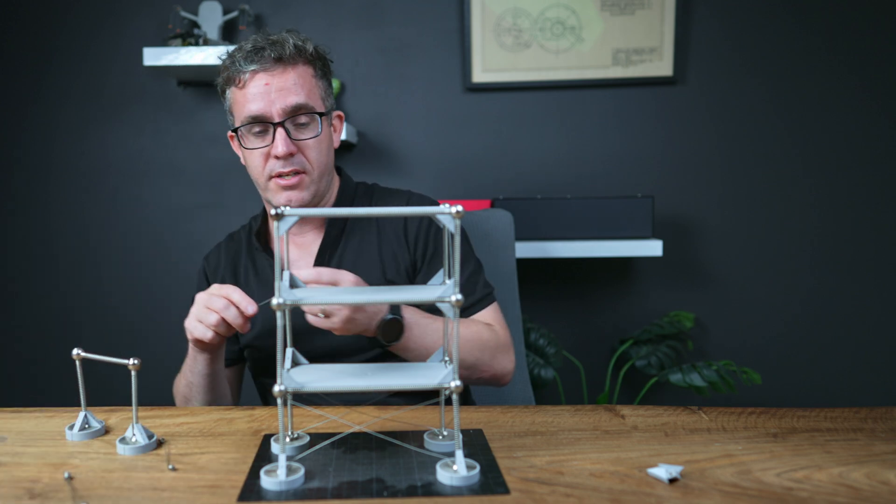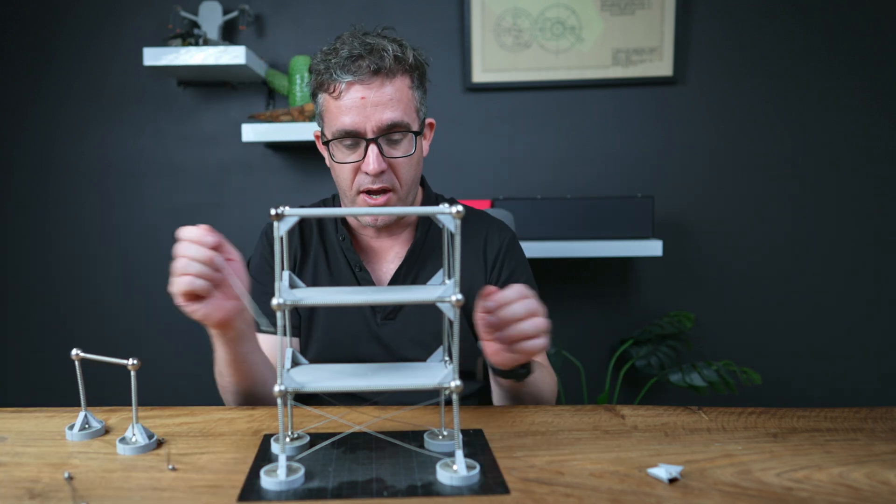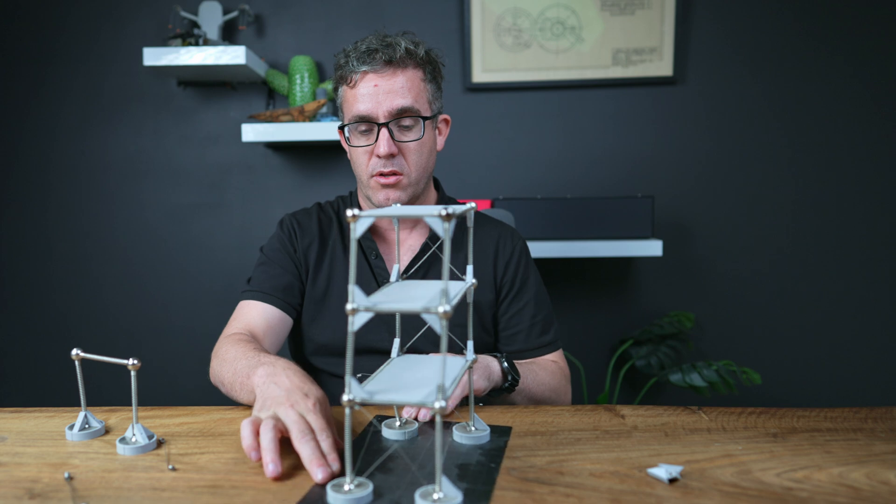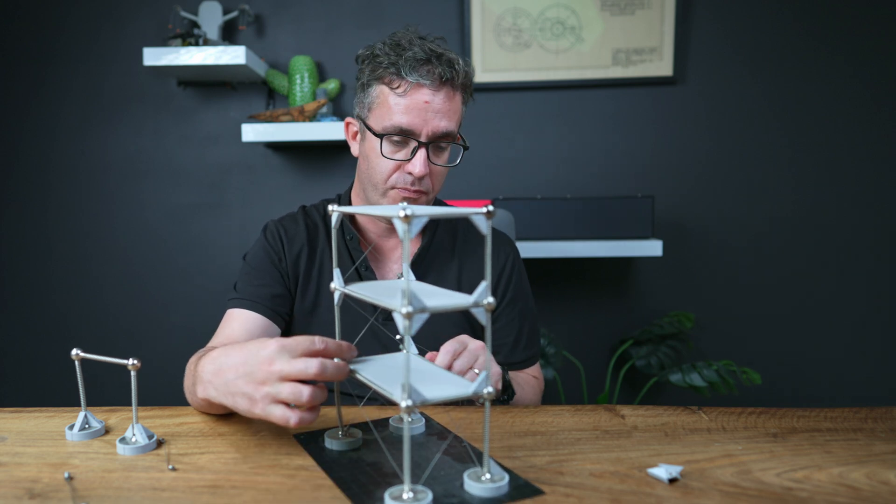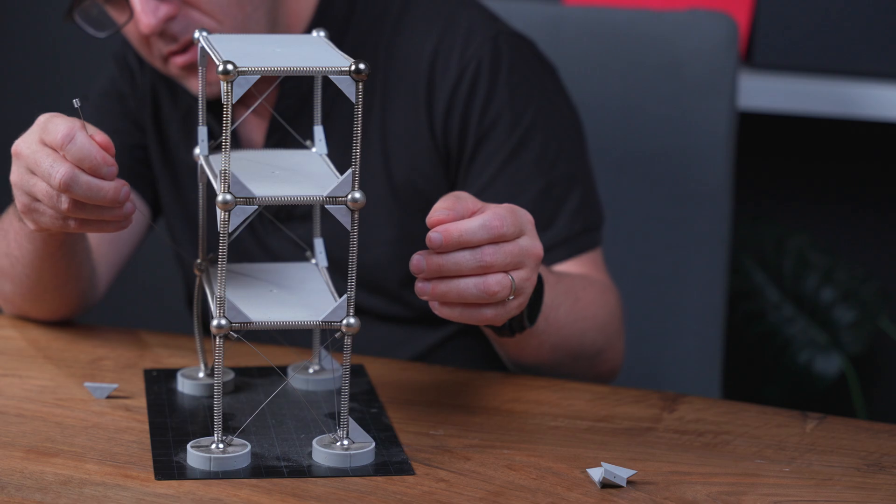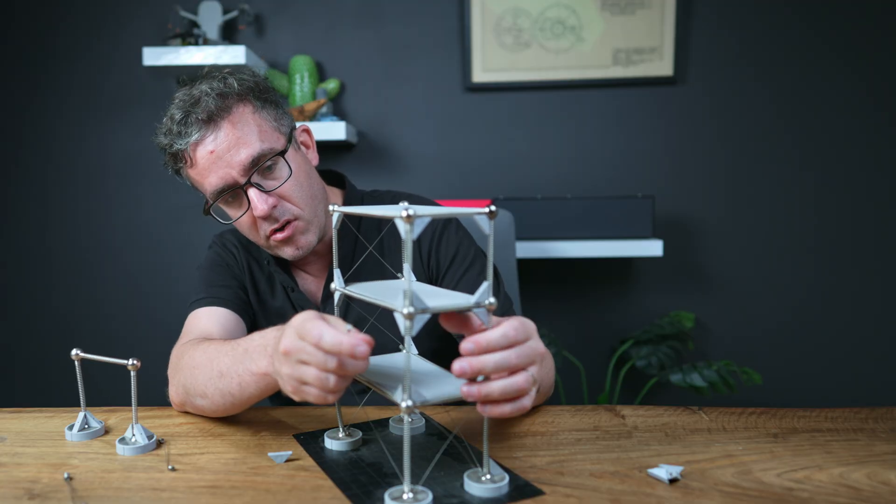So there's a couple of ways we can potentially try and fix that. We can either by adding another brace frame. So we've got the brace frame on this side on the lower floor. Let's see what happens if we change that brace frame to be on the long direction.